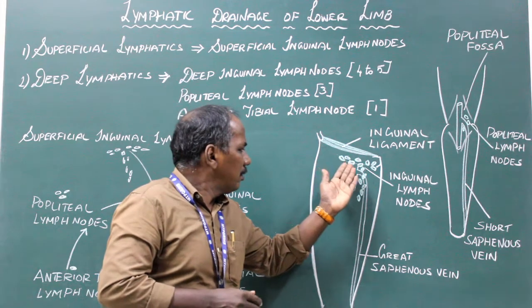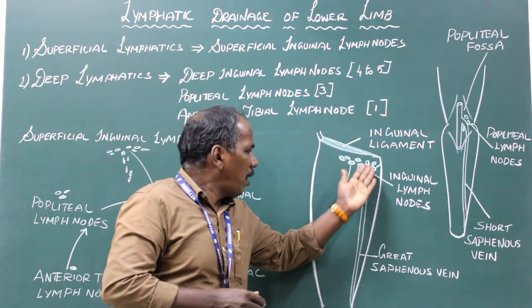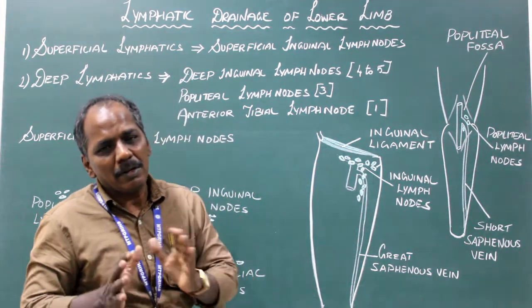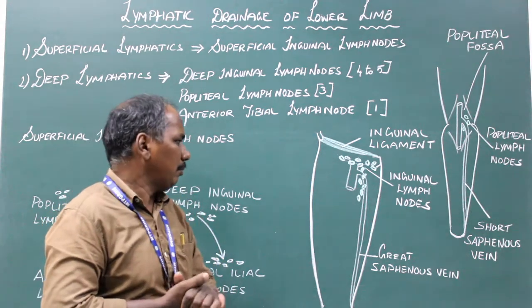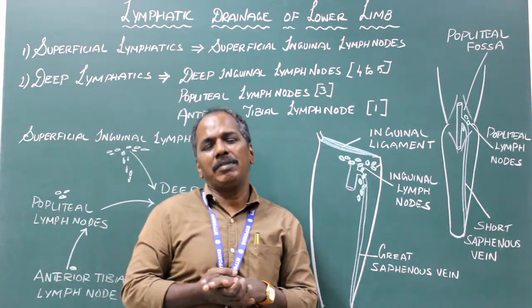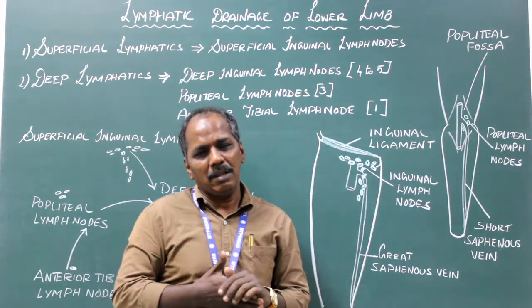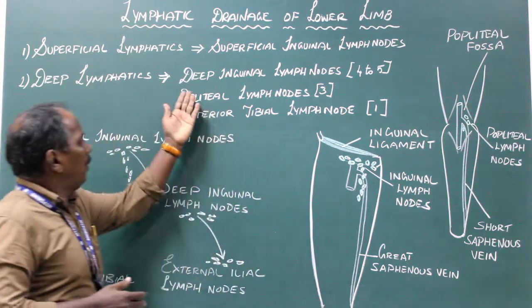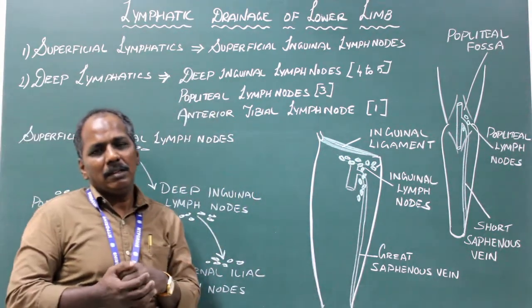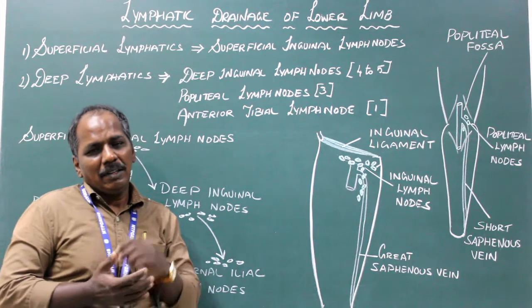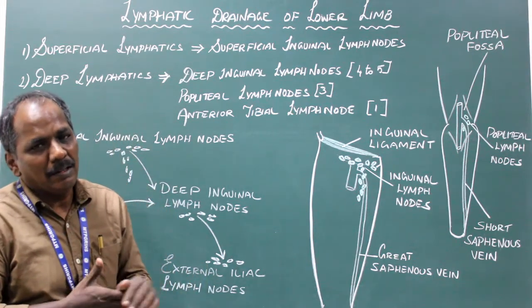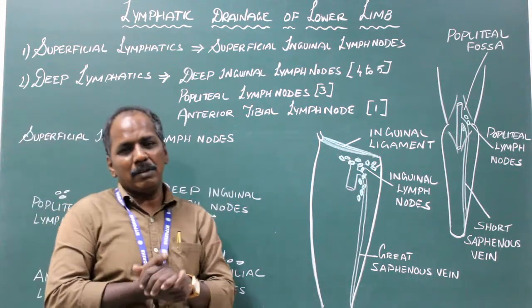All these superficial lymph nodes drain the majority of the lower limb. Deep inguinal lymph nodes are present deep in the thigh near the medial margin of the femoral vein, and consist of four or five nodes.